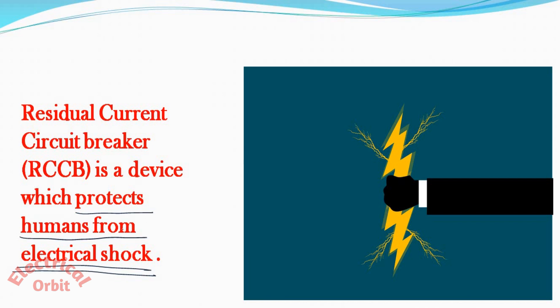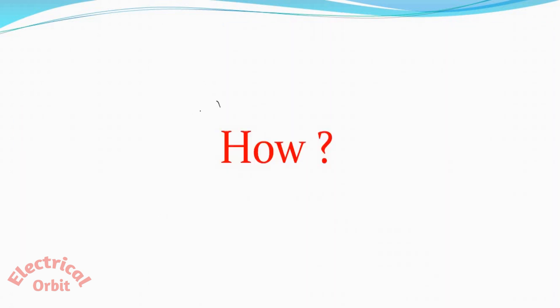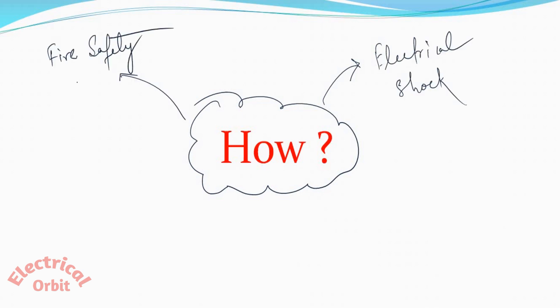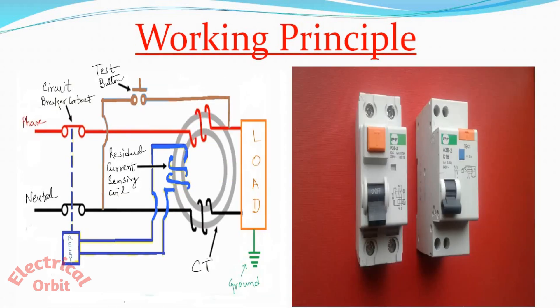Whenever we are connecting RCCB, we are making the system more safe or shockproof. In life-scale industry or in commercial places, the RCCB gives excellent fire protection. So this is another advantage of using RCCB in our electrical circuit. Now your question will be how it is giving us protection from electrical shock as well as in industry the fire safety. For that we need to understand the basic working principle of an RCCB.